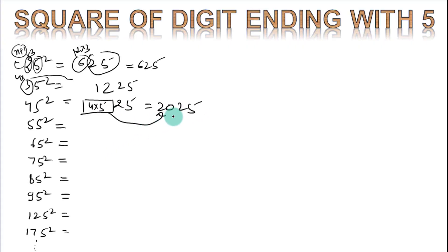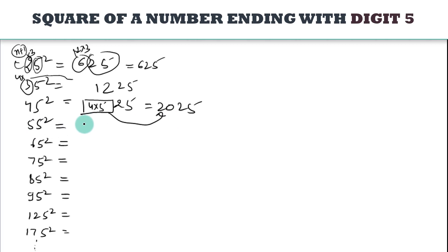So 2025 is the square. Suppose 55 square you have to find, then you write 5 square is 25, and 5 into 6, 5 plus 1 is 6. 6 into 5 how much? 30. 65 square, you write 25, 6 plus 1 is 7, 7 times 6?